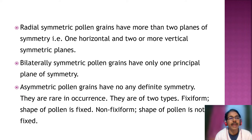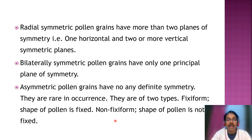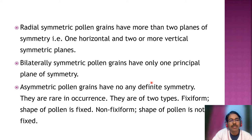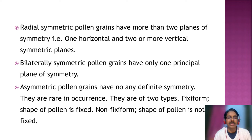Radial symmetric pollen grains have more than two planes of symmetry — that is one horizontal or two or more vertical planes. In bilateral symmetric pollen grains, they have only one principal plane of symmetry. The asymmetric pollen grains have no definite symmetry, and on the basis of this they are divided into two groups: fixiform, where the shape of the pollen grain is fixed, and non-fixiform, where the shape of the pollen grain is not fixed.